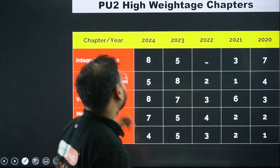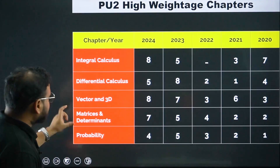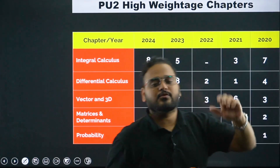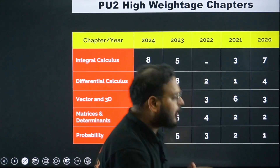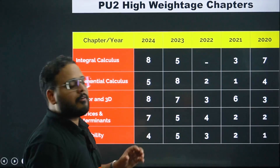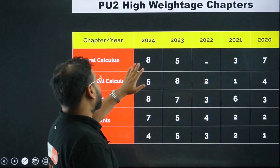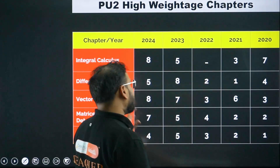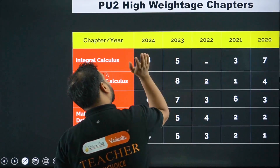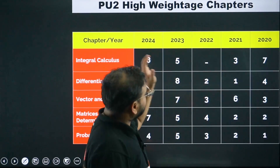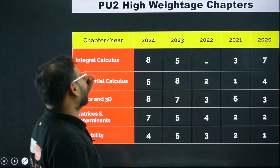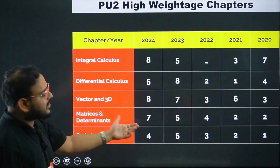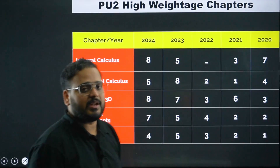In the PU2 category, we have integral calculus, differential calculus, vector and 3D, matrix and determinant, and probability — with question counts of 8, 5, 8, 7, and 4 respectively. I went through your previous year questions and found eight questions from integral calculus — from the chapters AOI and integration, both definite and indefinite. Every year you can expect around five to six questions from integral calculus, six from differential calculus, seven to eight from vectors and 3D, five to six from matrix and determinant, and four from probability.